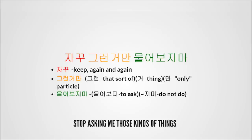And we have 물어보지 마, which comes from the verb 물어보다, meaning 'to ask something.' If you conjugate a verb with 지 마, it means 'don't do it.' So 물어보지 마 means 'do not ask.' For example, 하지 마 means 'don't do it,' and 먹지 마 means 'don't eat it.' It's a very helpful conjugation to learn. So the full line — 자꾸, 그런 거만, 물어보지 마 — literally means 'don't keep asking me those kinds of things,' translated as 'stop asking me those kinds of things.'